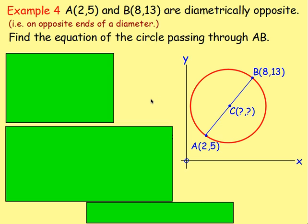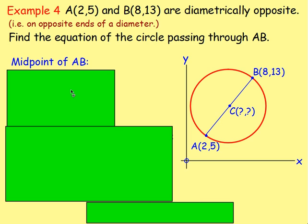Example 4: A is 2, 5 and B is 8, 13, and they are diametrically opposite — meaning opposite ends of the diameter. Find the equation of the circle passing through A and B. Sketching this: the two points lie at opposite ends of the diameter, so you can draw in the circle through those points. To get the equation you need the centre and the radius. The centre is just the midpoint of line AB.